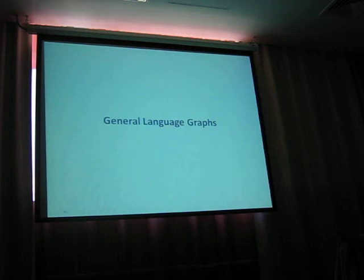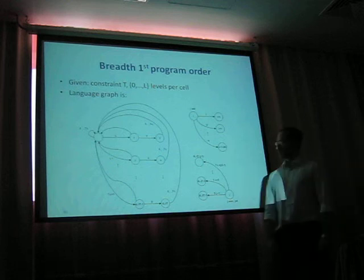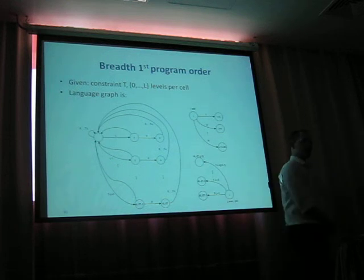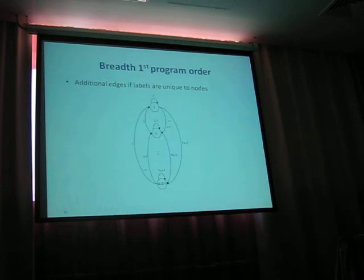If we want to generalize our scheme, and say we have a cell with L levels and we want to constrain it by T, we've been able to build a generalized constrained language graph in which you only need to put L and T in the right values and you will get a constrained language graph. Those are the ingredients of the graph in terms of edges and nodes, and there's additional edges if the labels are unique to the nodes.